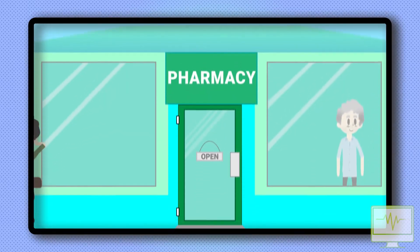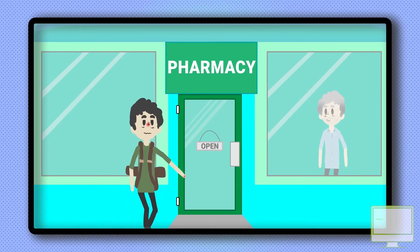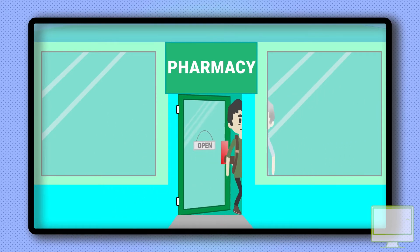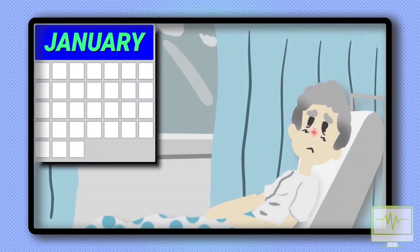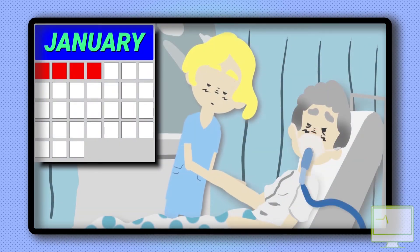Influenza can also be transmitted from touching virus-contaminated surfaces and then touching the mouth, eyes or nose. A person is infectious from the day before symptoms start and up to at least five to seven days after becoming ill.